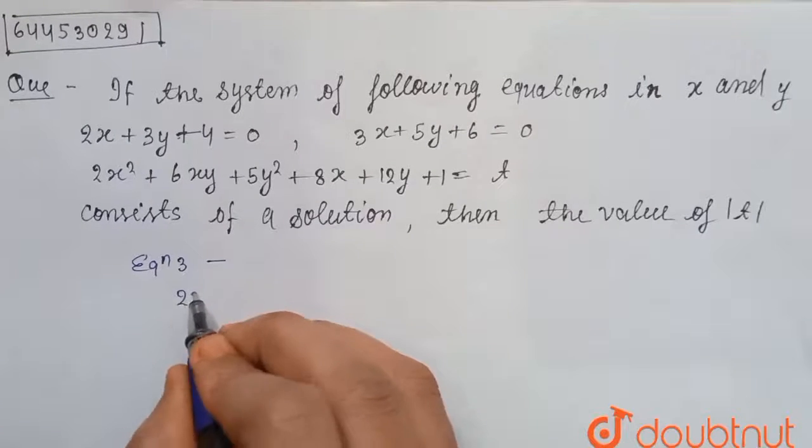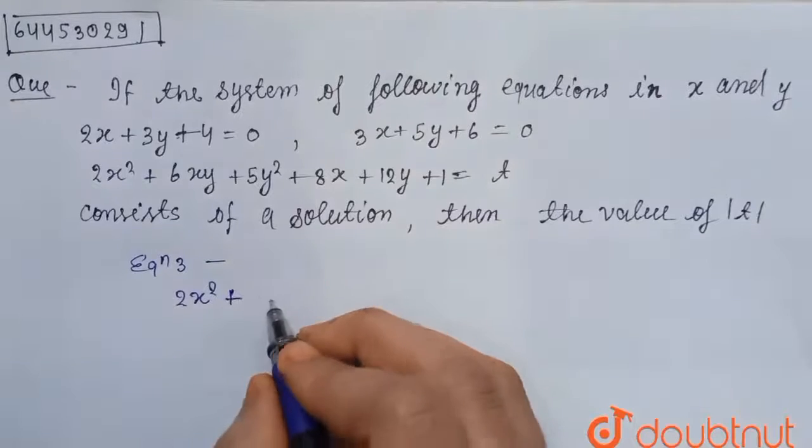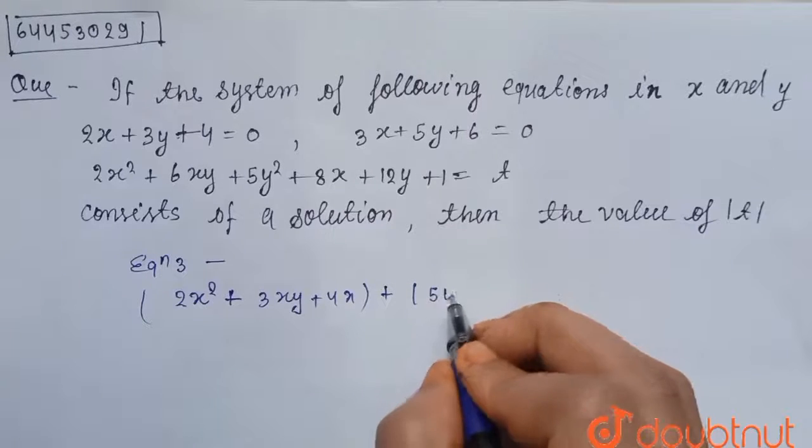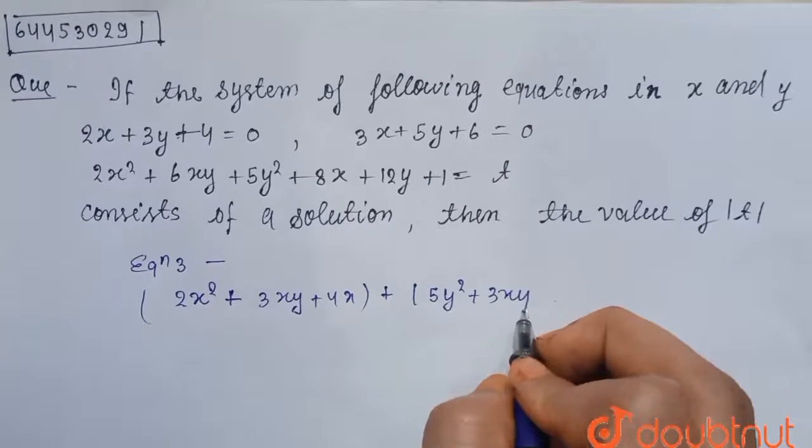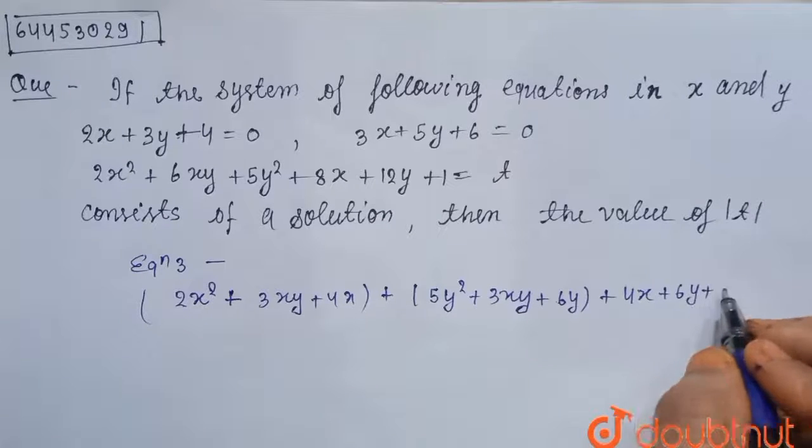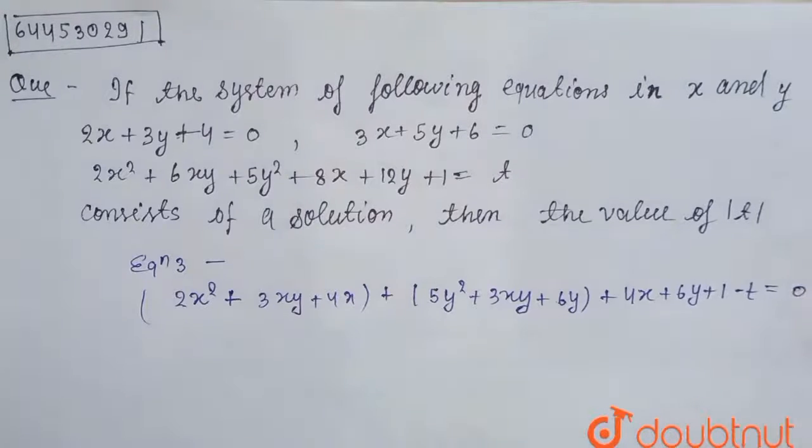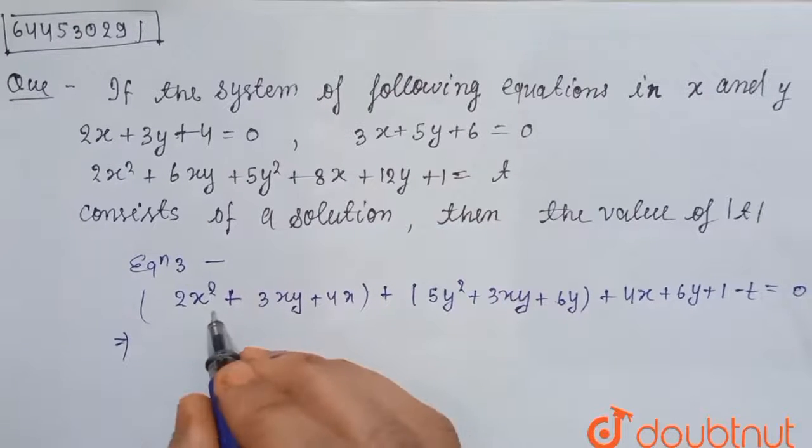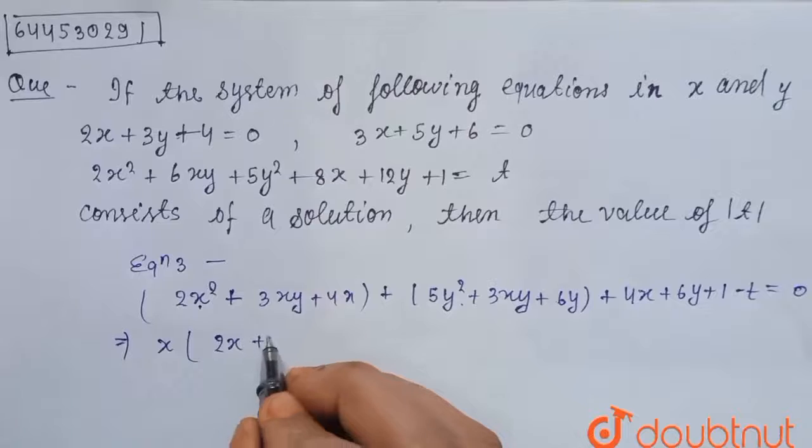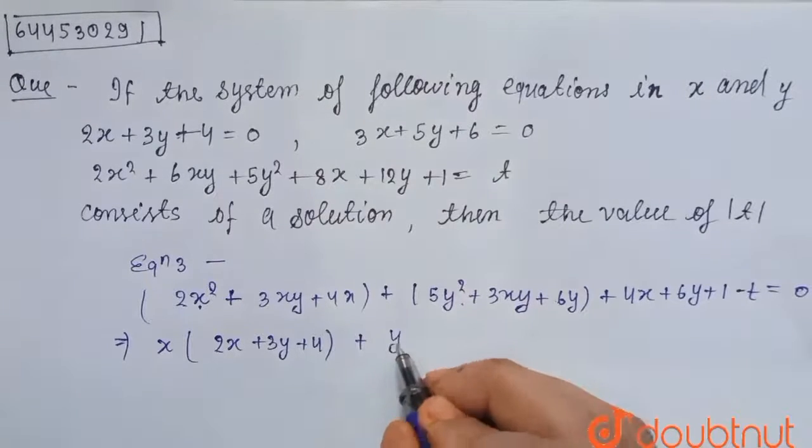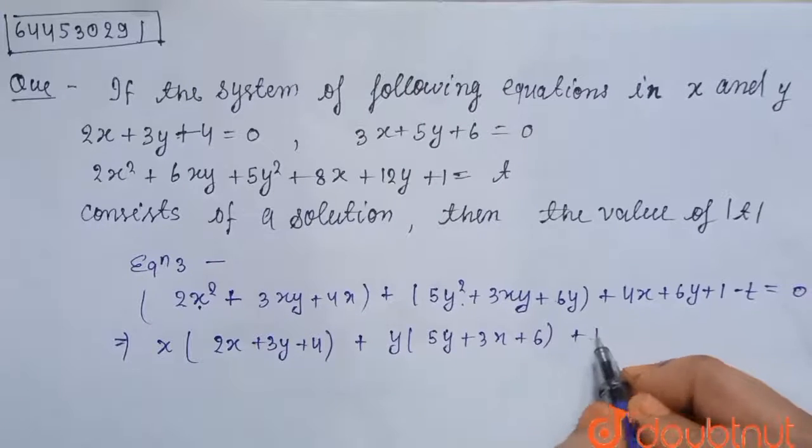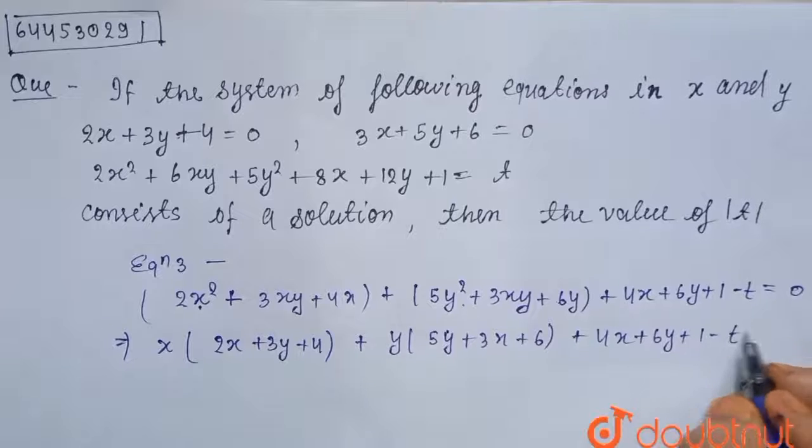We can write this equation: 2x square plus 3xy plus 4x plus 5y square plus 3xy plus 6y plus 4x plus 6y plus 1 minus t equals to 0. Now, when we take out common x from here and y from here, we get x into 2x plus 3y plus 4 plus y into 5y plus 3x plus 6 plus 4x plus 6y plus 1 minus t equals to 0.